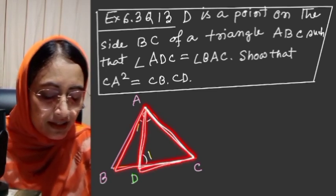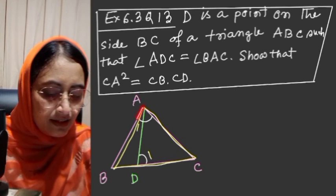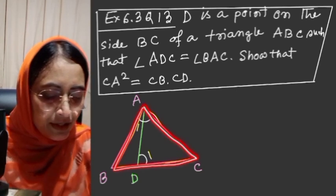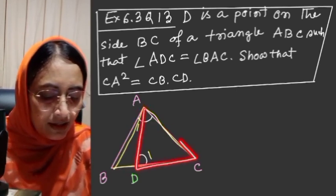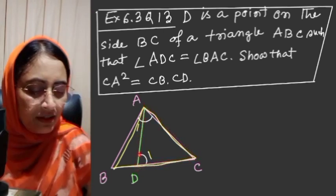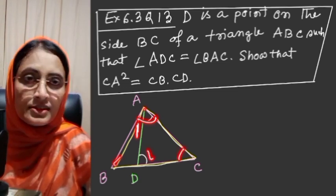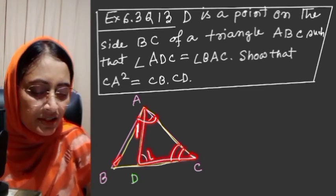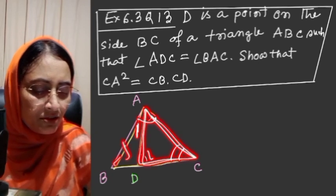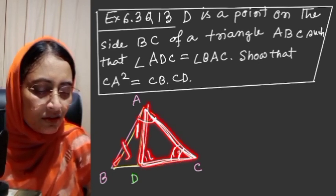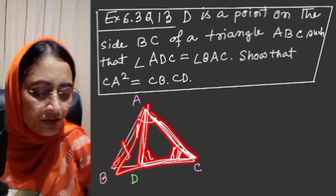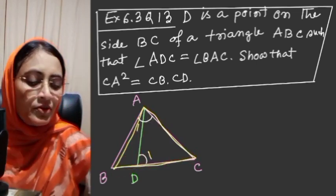Angle C is common from triangle ABC and triangle ADC. Two angles are equal and C is common to both triangles. Therefore, angle C is common.